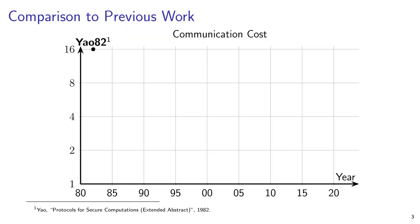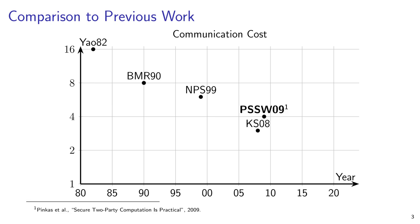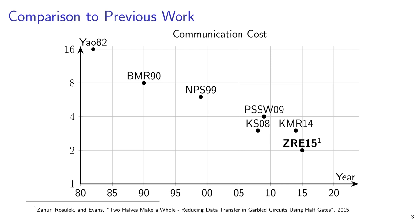Researchers have been improving garbled circuits' communication costs ever since Yao first invented them. This plot shows the cost of garbling a circuit consisting of an AND gate and an XOR gate. Beaver, Macaulay, and Rogoway introduced the point-and-permute optimization. Naur, Pinchas, and Sumner saved a ciphertext in each gate by using row reduction. Kolesnikov and Schneider introduced a very important optimization called free XOR, which eliminates all communication from XOR gates. Zahur, Roslick, and Evans found that XORing together two half-gates makes a whole AND gate, and is compatible with free XOR.